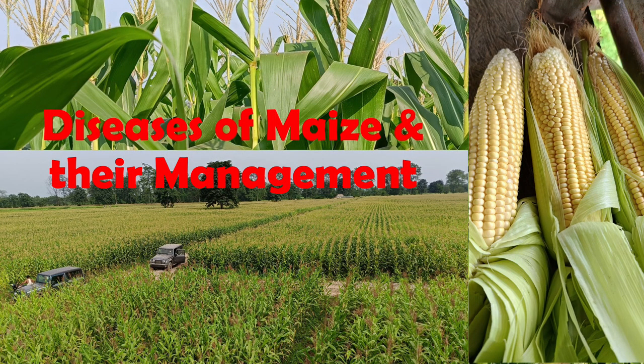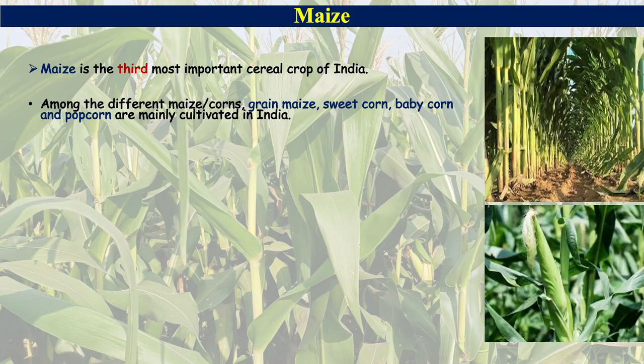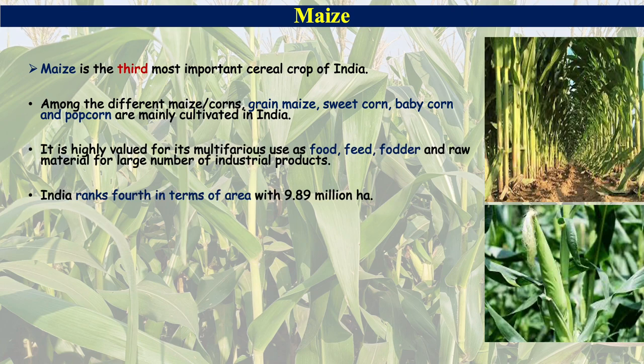Welcome to this video on diseases of maize and their management practices. Maize is the third most important cereal crop of our country. Among different types, green maize, sweet corn, baby corn, and popcorn are mainly cultivated. It is highly valued for its multifarious use as food, feed, fodder, and raw material for a large number of industrial products.